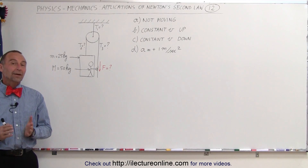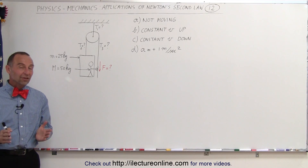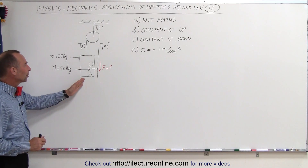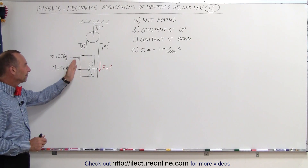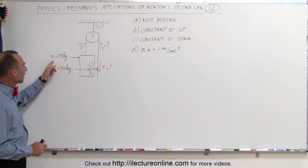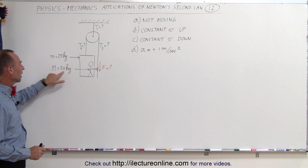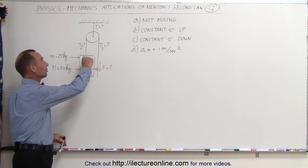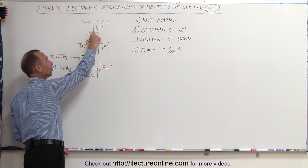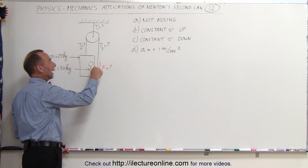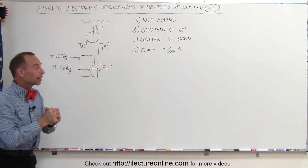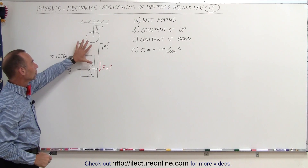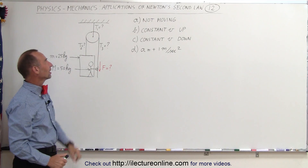Welcome to ElectronLine. Here's another application of Newton's Second Law — an interesting one. We have a person inside a box. The mass of the box is 25 kilograms, the mass of the person is 50 kilograms. The box is suspended by a cable that goes over a pulley, and the other end of the cable is held by the person inside the box, with the whole contraption attached to the ceiling.